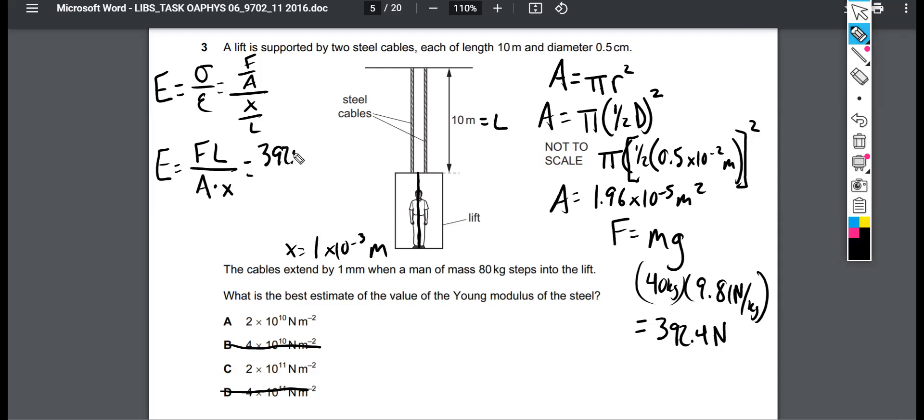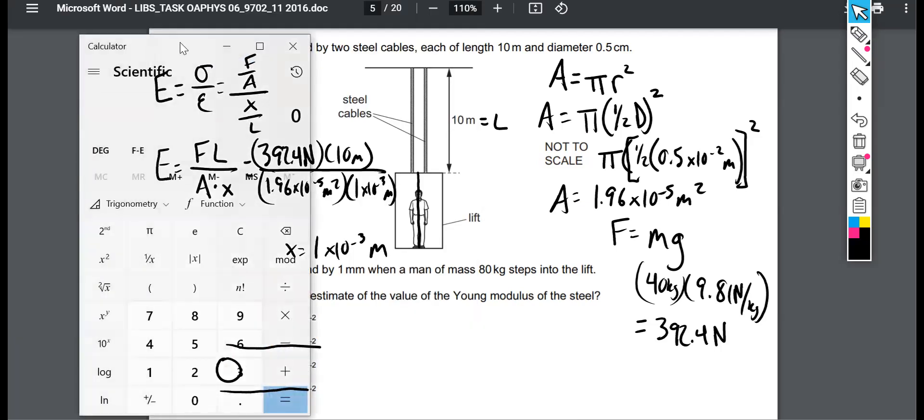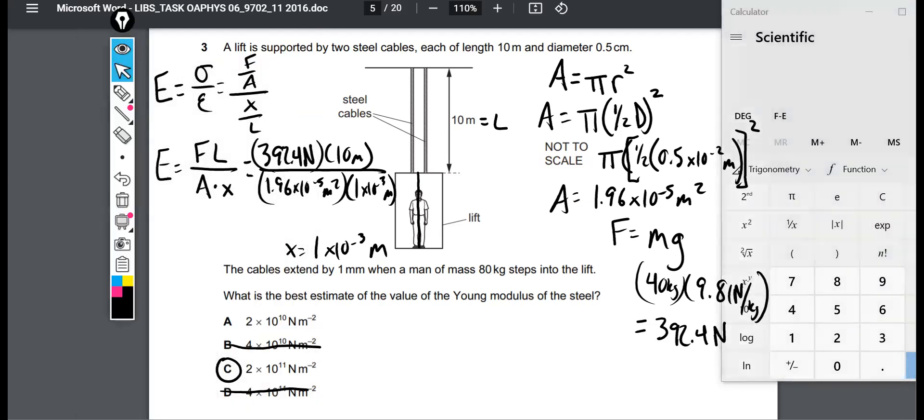So in the numerator, we got 392.4 newtons times 10 meters divided by this area here, 1.96 by 10 to the negative 5 meters squared. So again, those are your units right there, newtons per meter squared. And this one is this value 1 by 10 to the negative 3 meters. So these meters cancel, newtons per meter squared are the units there. If you type all that in your calculator correctly, you should get choice. What's that, YouTube? You want to see that calculated on the screen? It'd be my pleasure. We got to find a good spot for it here. There we go. We'll move that out of the way. We'll slide this one up.